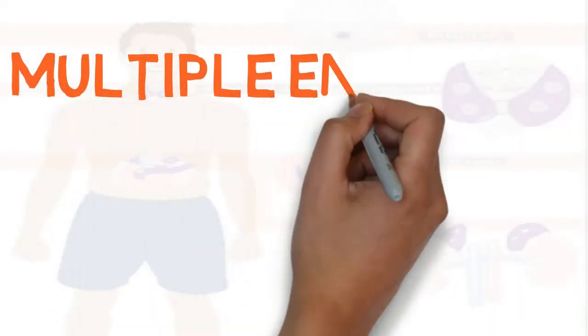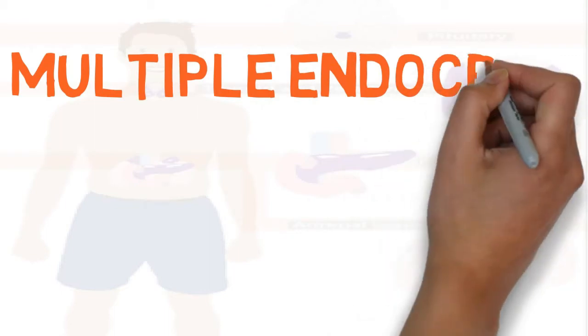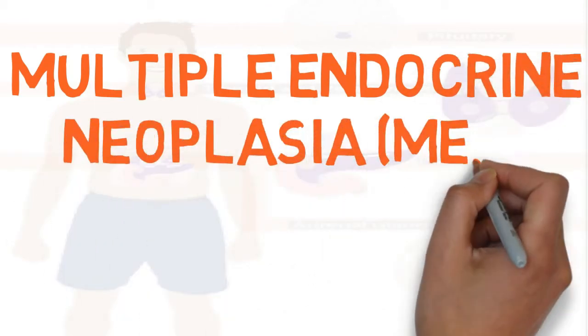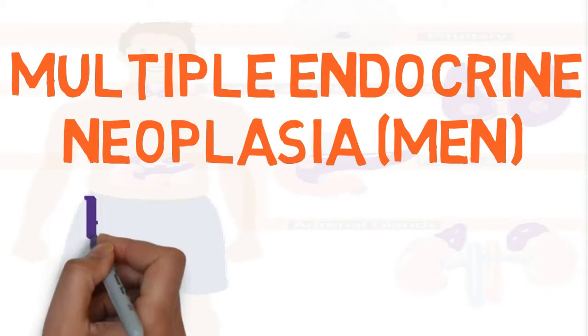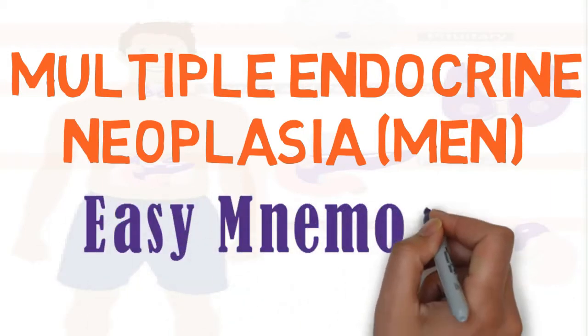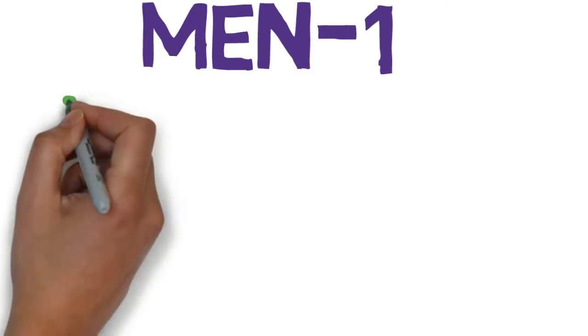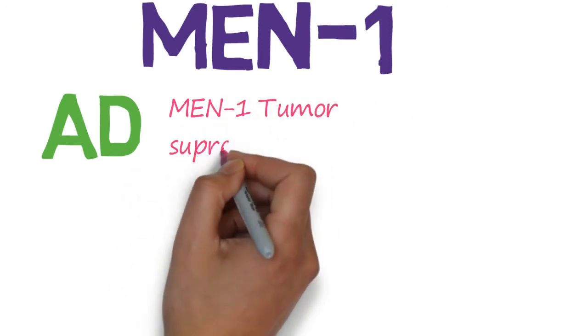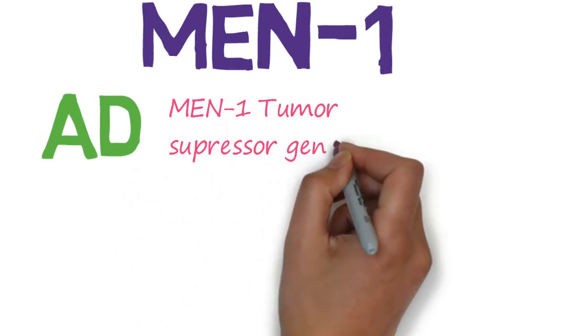In this video we'll discuss mnemonics to remember Multiple Endocrine Neoplasia (MEN). MEN is classified into type 1 and type 2; type 2 is further divided into type 2a and 2b. MEN1 is an autosomal dominant disorder caused by a mutation in the MEN1 tumor suppressor gene.